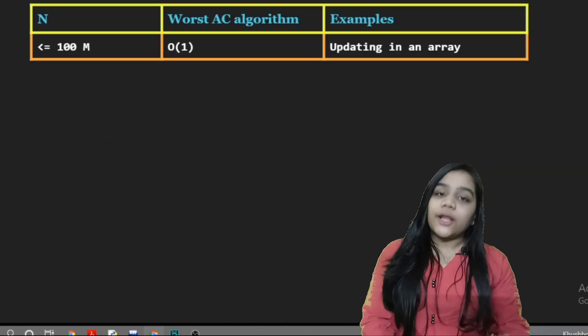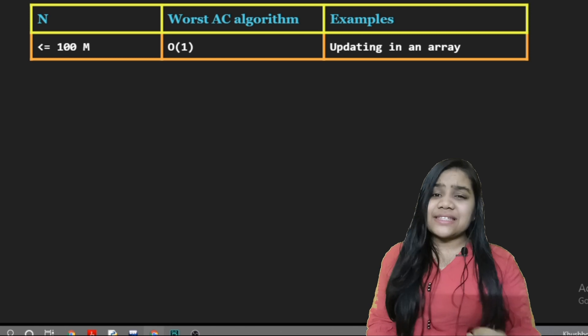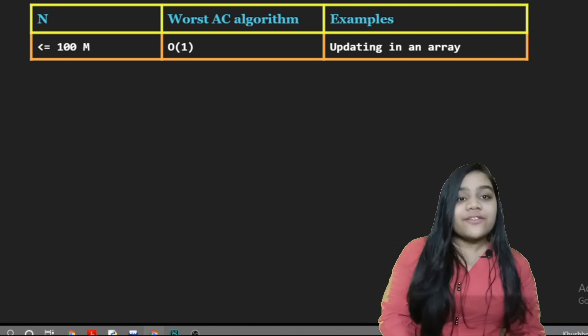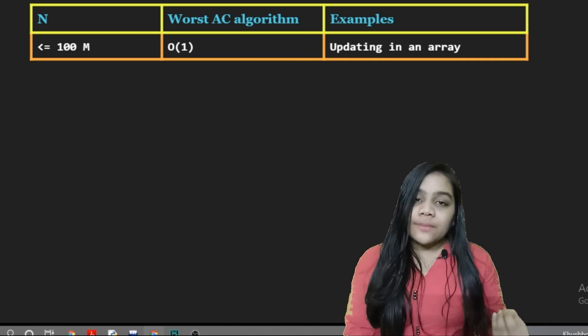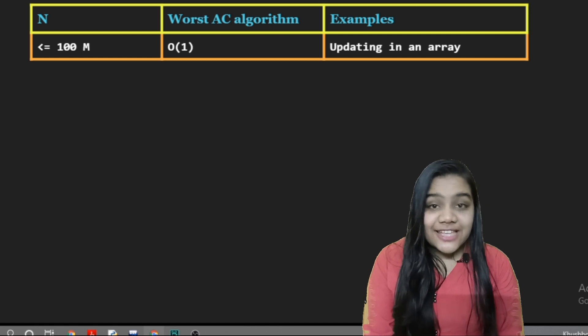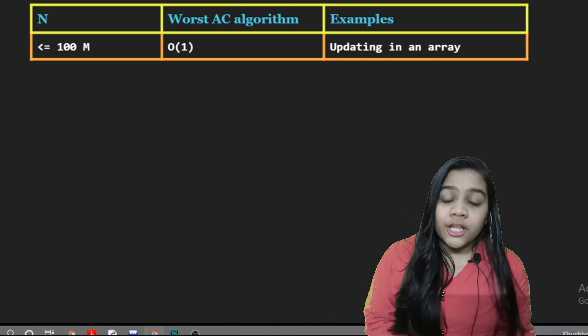So today's computer can do 10 to the power 8 operations in less than or equal to 1 second, or we can say 100 million operations. We can also judge a time complexity required by the given input size. So let's analyze the time complexity for a given input range.